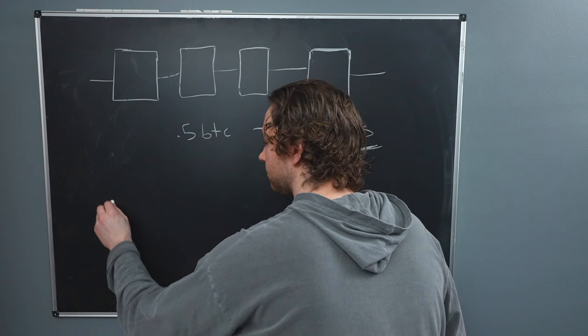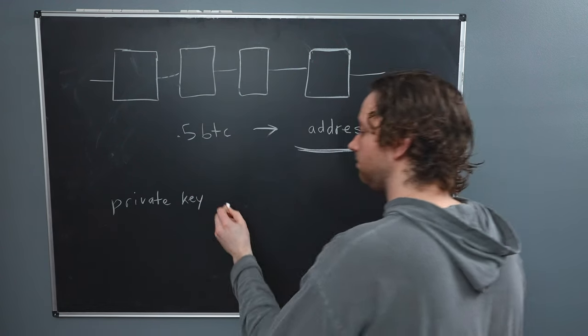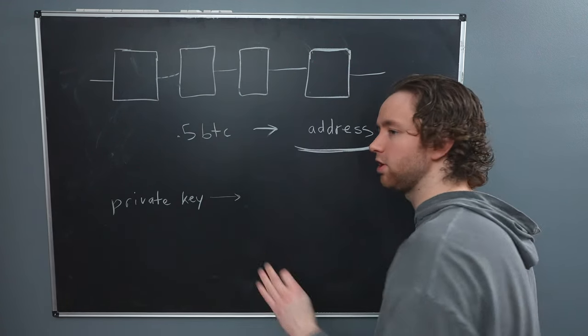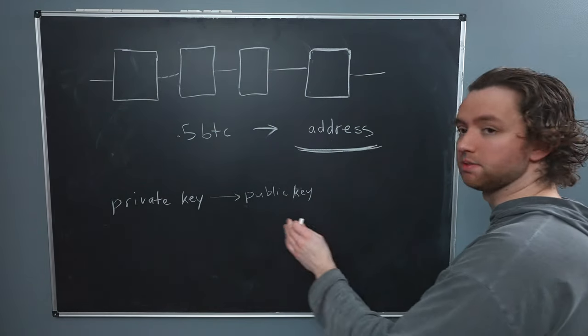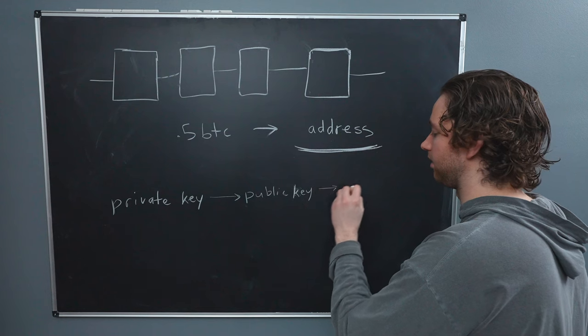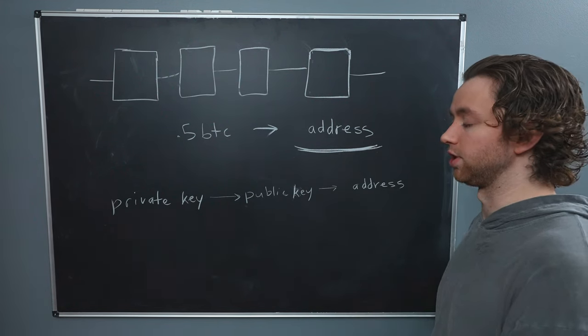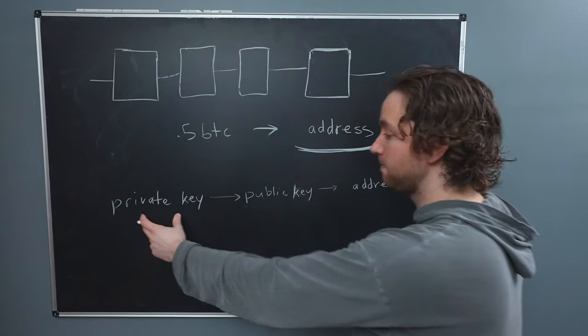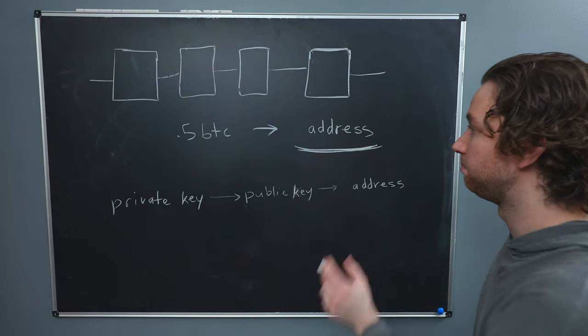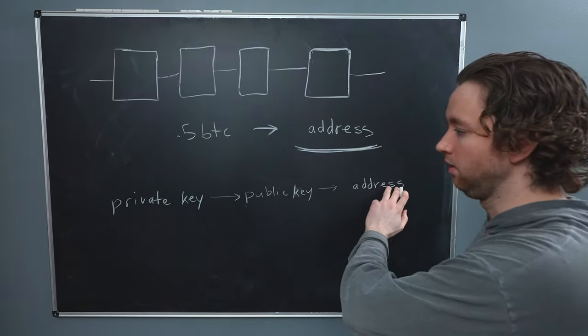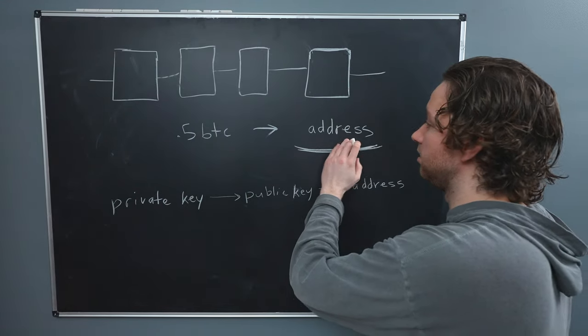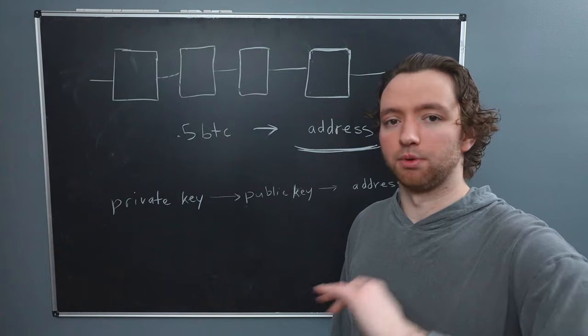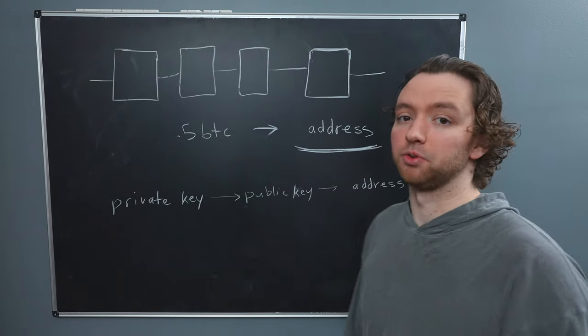Well, this address is actually derived from something called your private key. So it's going to look something like this. Private key. And this can generate, there's actually another step in here, the public key. And then this public key can generate your address. And this is a one-way conversion. So if you have this private key, you can generate this address. But if you have this address, you can't work your way back and generate the private key. So the address does not give away your private key. You can share the address with other people.